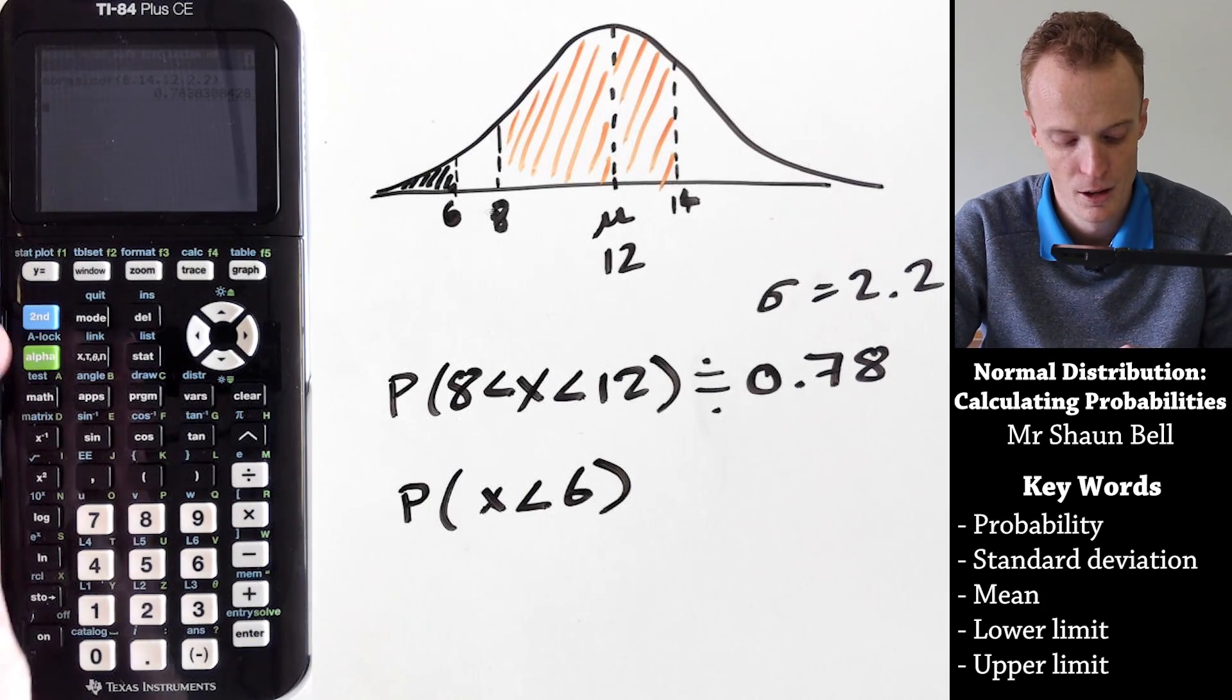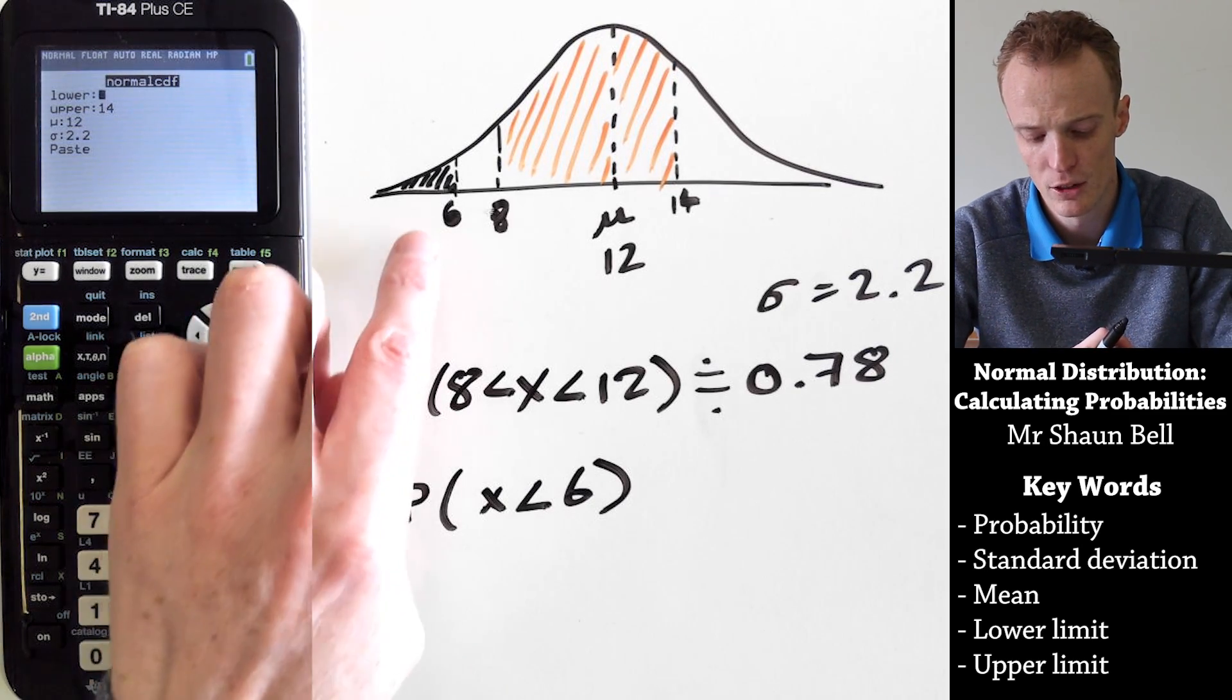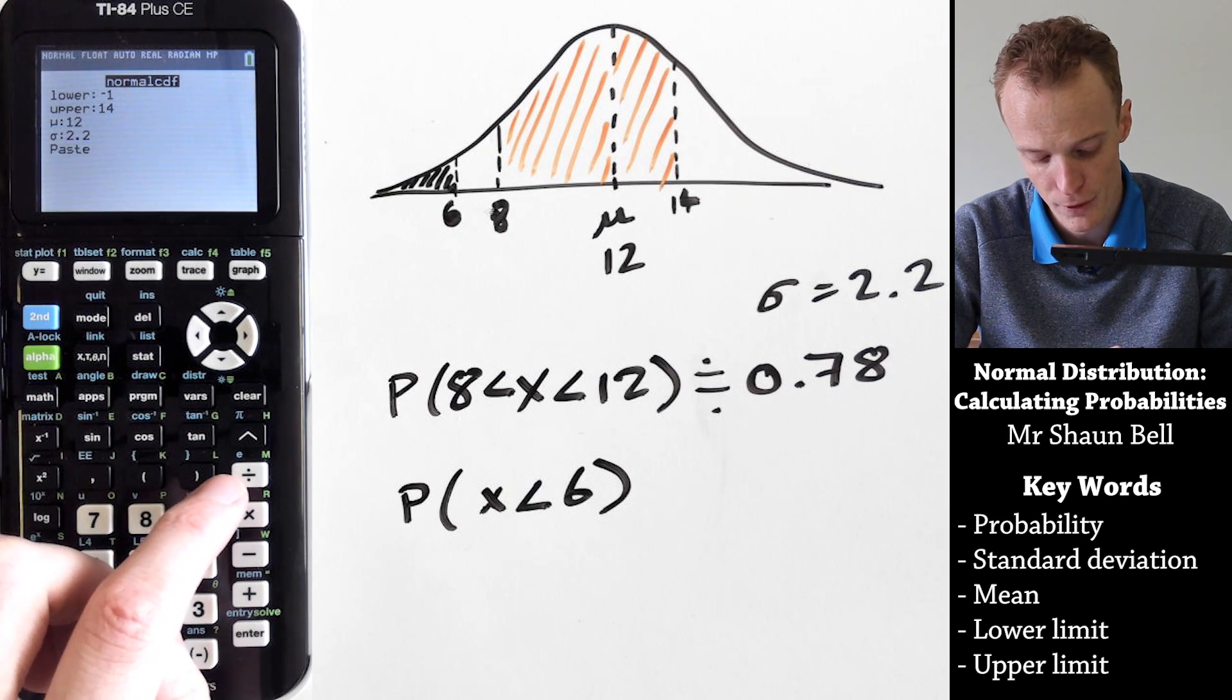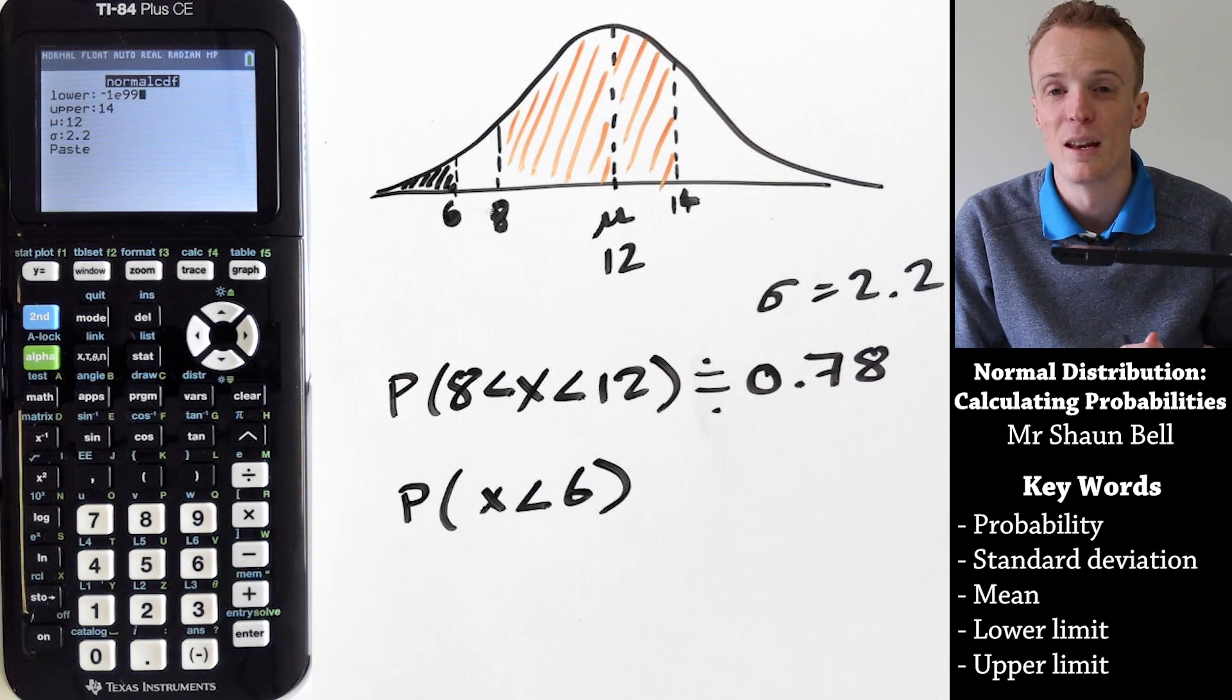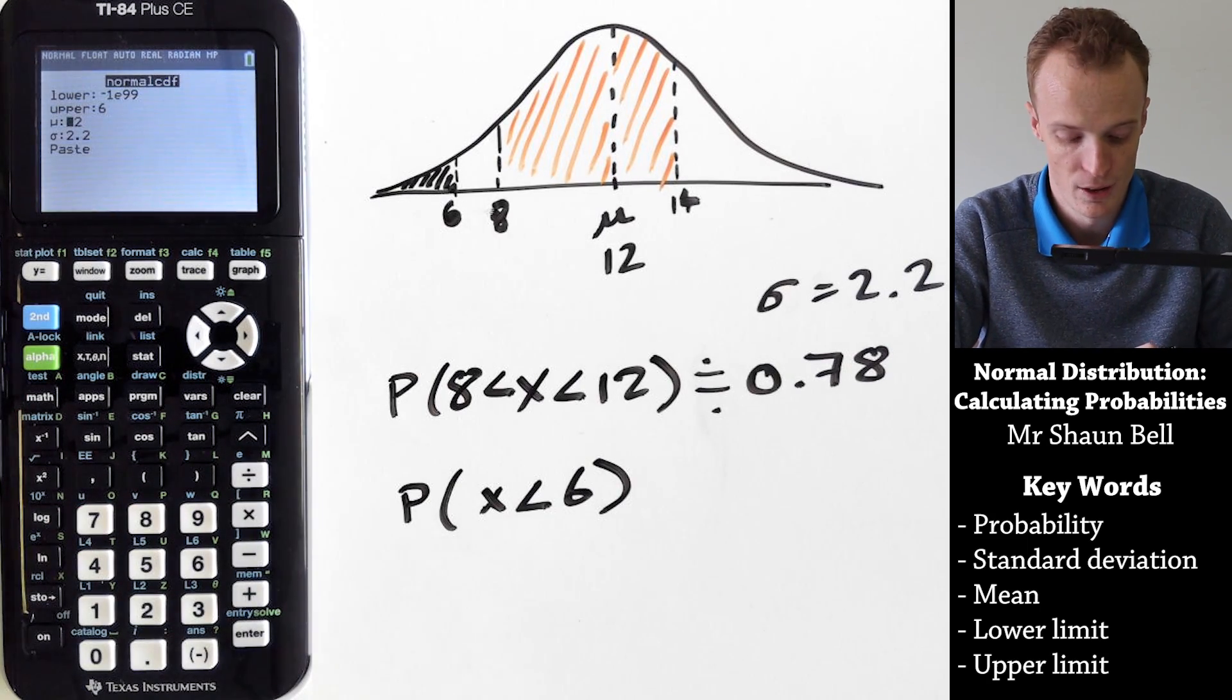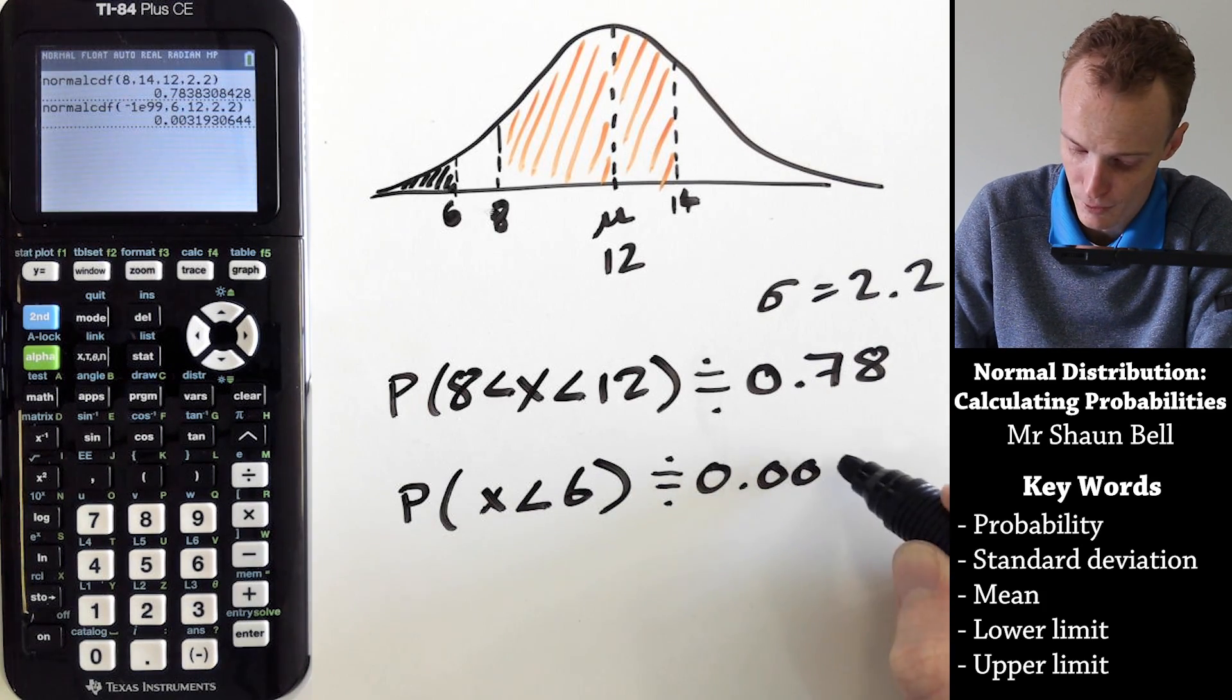Now to enter this into your calculator, you go back into the distribution cdf function, so normal cdf as we did before, but we now need to change the lower function. We need to change the lower function to a really really small number. To do this, we usually go negative 1 to the e, which is that value above the divide sign. So you go second e to the 99, and what that indicates is it's infinitely negative inside of our calculator. Our upper bound is the 6. Our mean and standard deviation are the same, so we paste that in and then hit enter, and it will tell us that the probability is approximately equal to 0.0032.